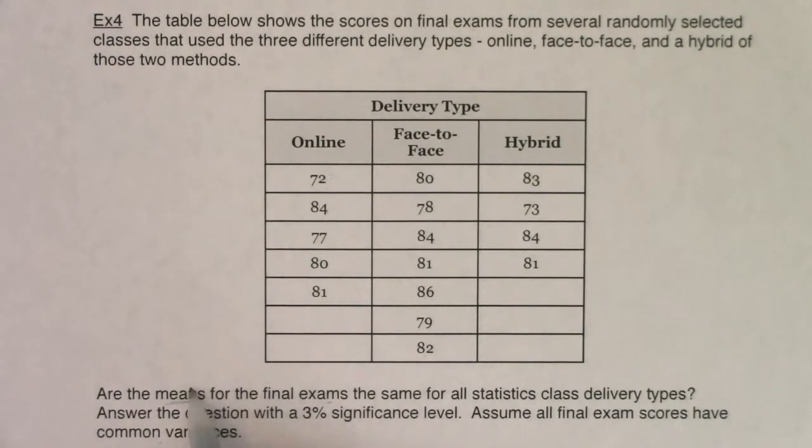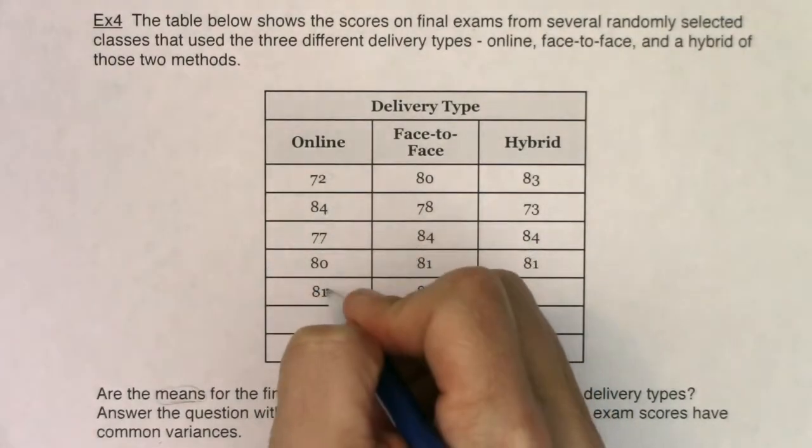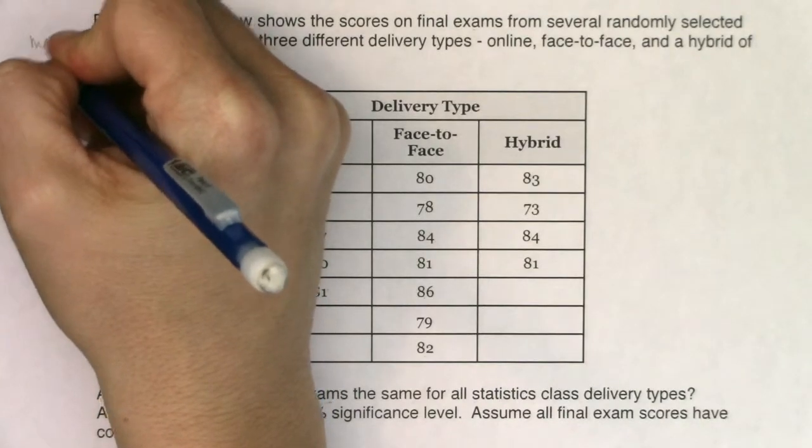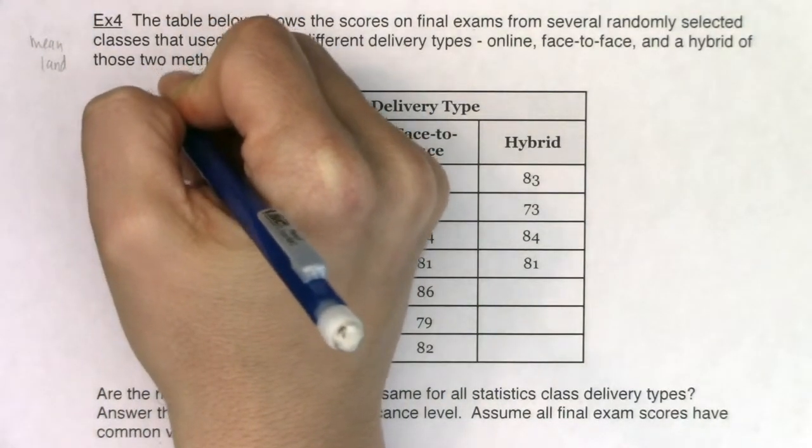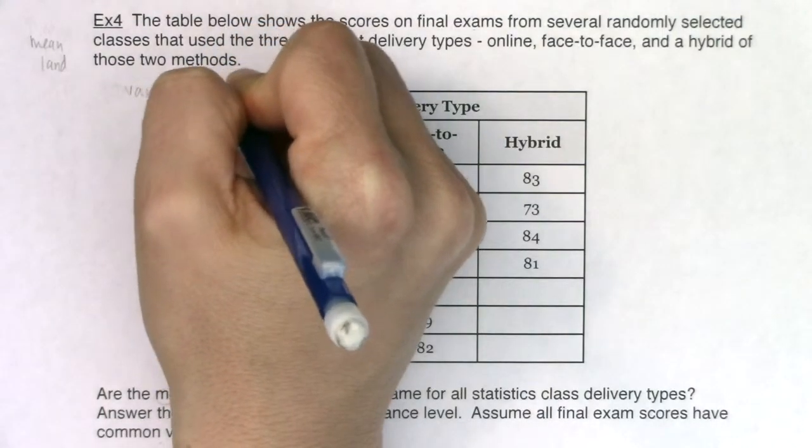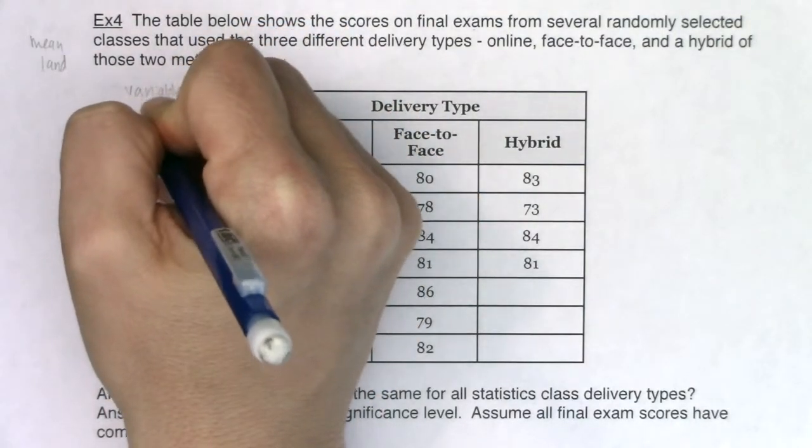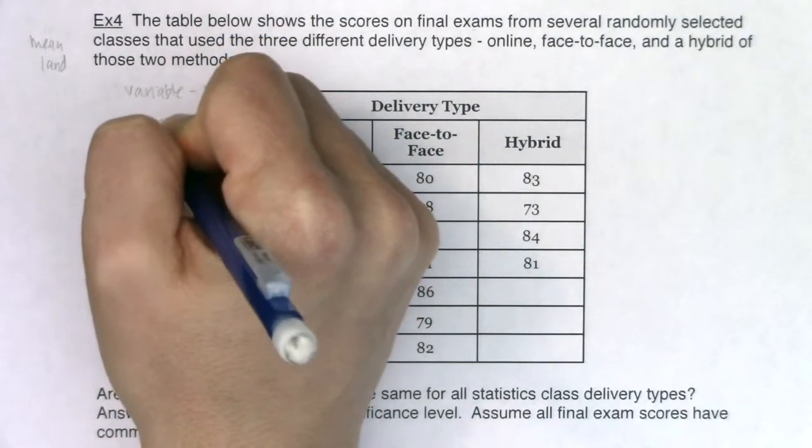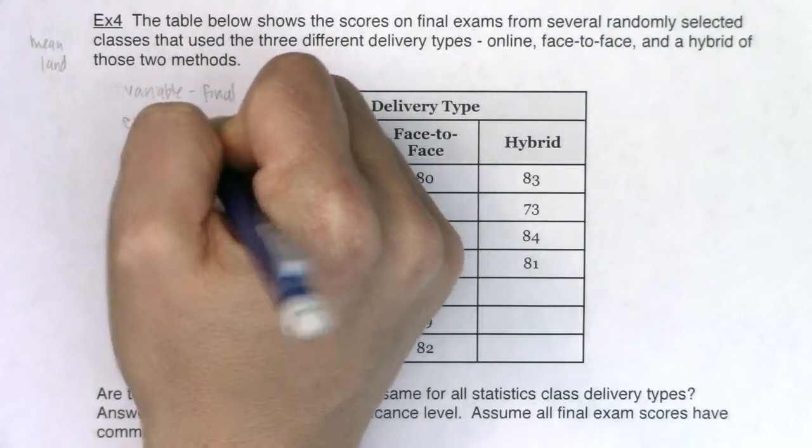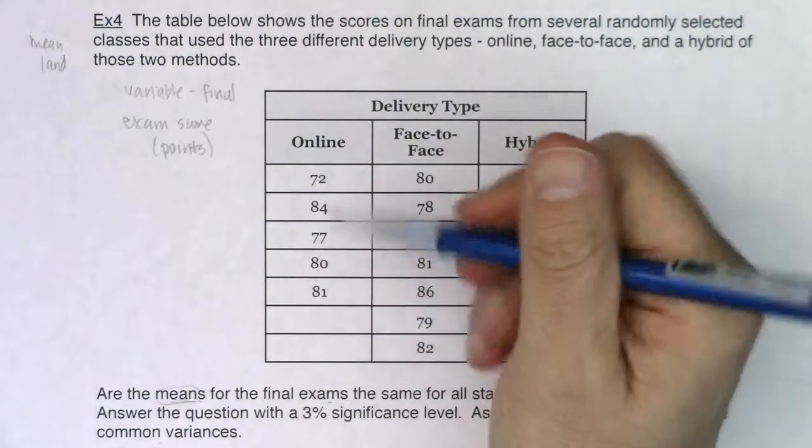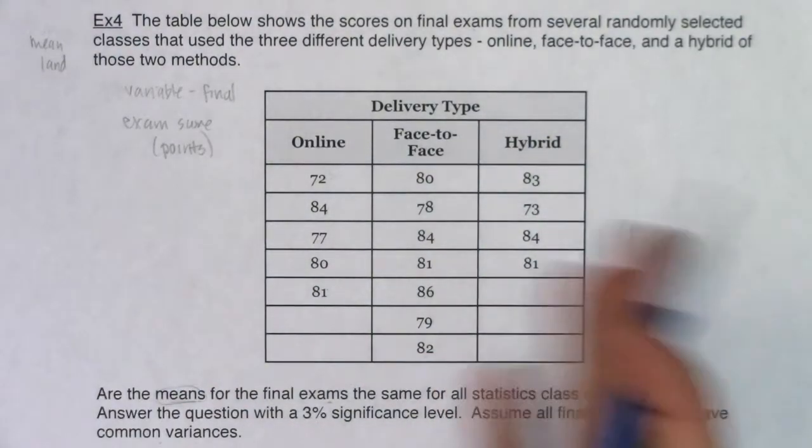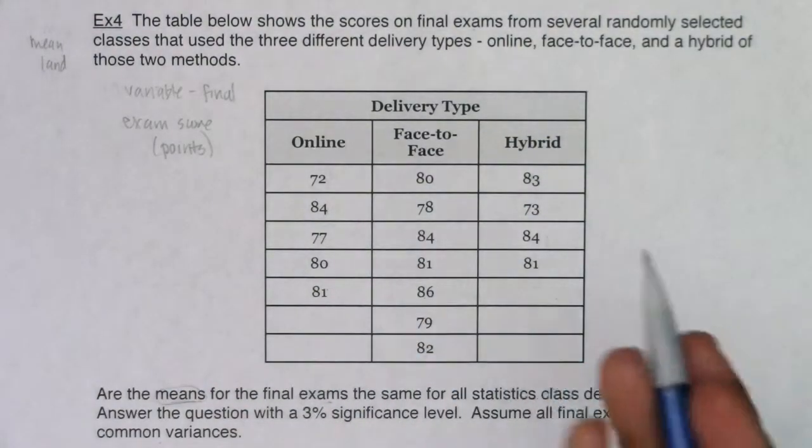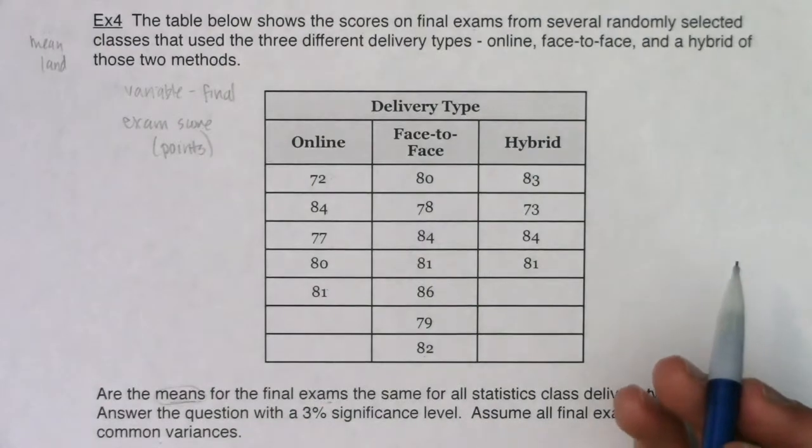This is a score from a student's final that took their stats class face-to-face. This is from a final exam of a student who took a hybrid stats class. So what we're going to see is if any one method produces a higher average than the other. But all that aside, I'm in mean land, right? This is numerical data.